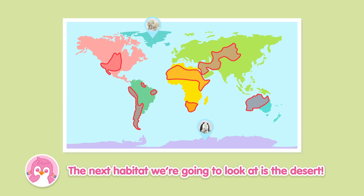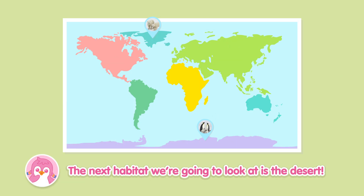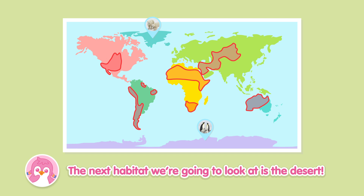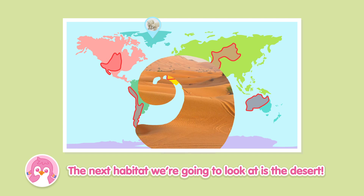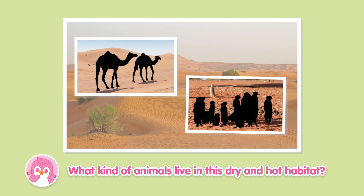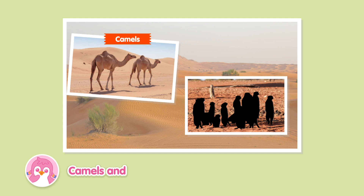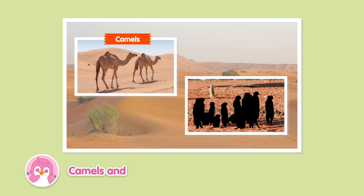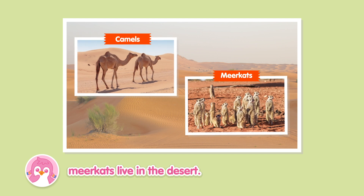The next habitat we're going to look at is the desert. What kind of animals live in this dry and hot habitat? Camels and meerkats live in the desert.